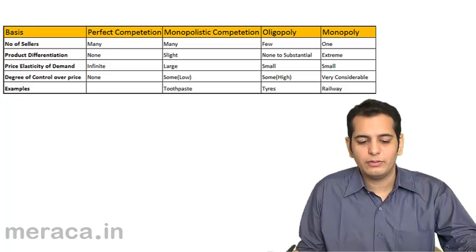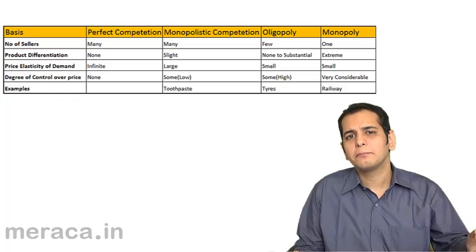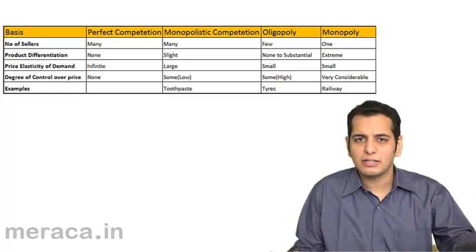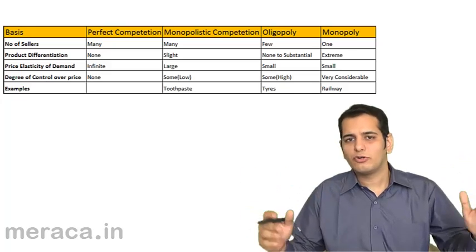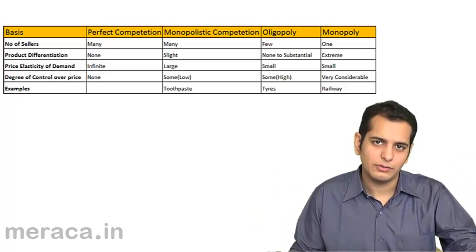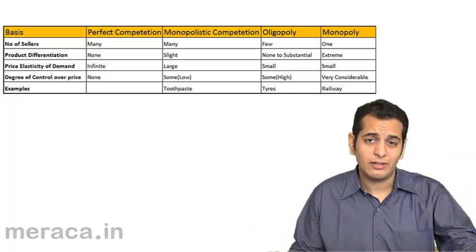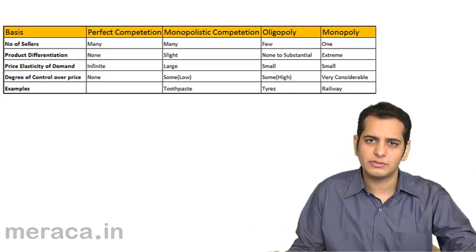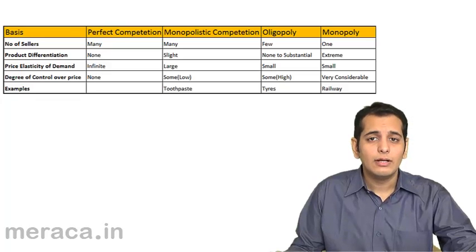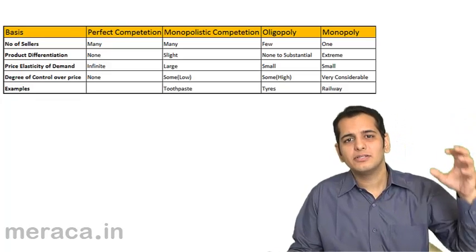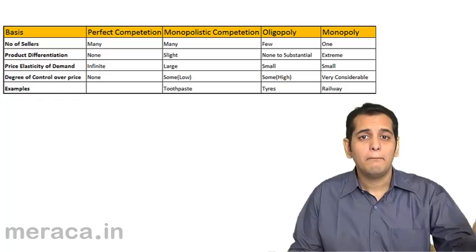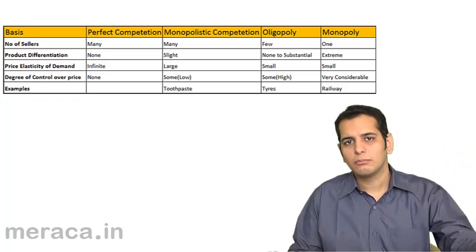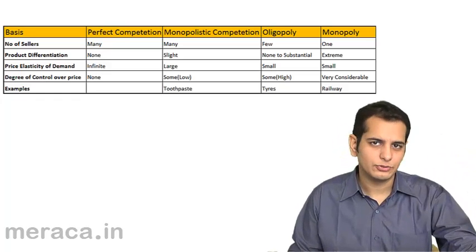Let's start with perfect competition. Perfect competition is a market wherein there are a large, innumerable number of buyers and sellers. At the same time, these buyers and sellers have perfect knowledge about market conditions.